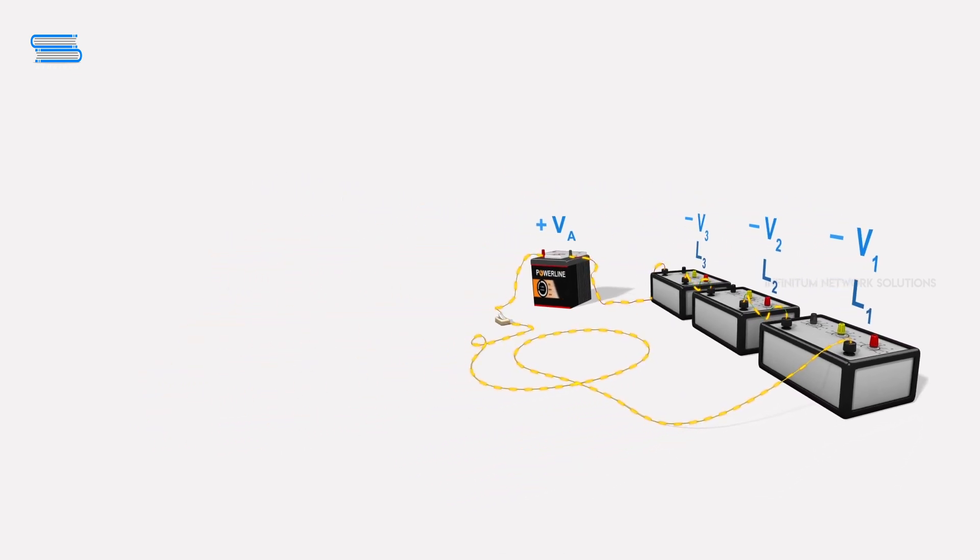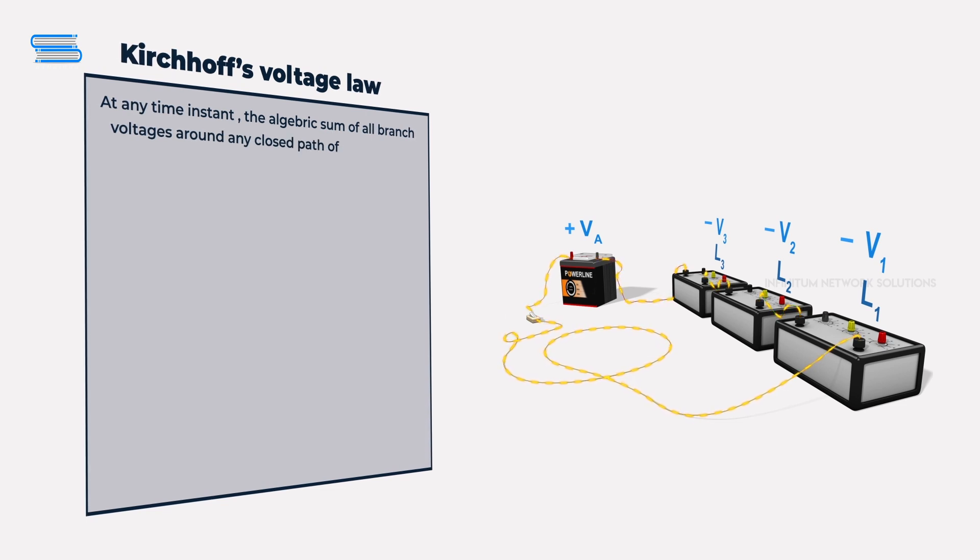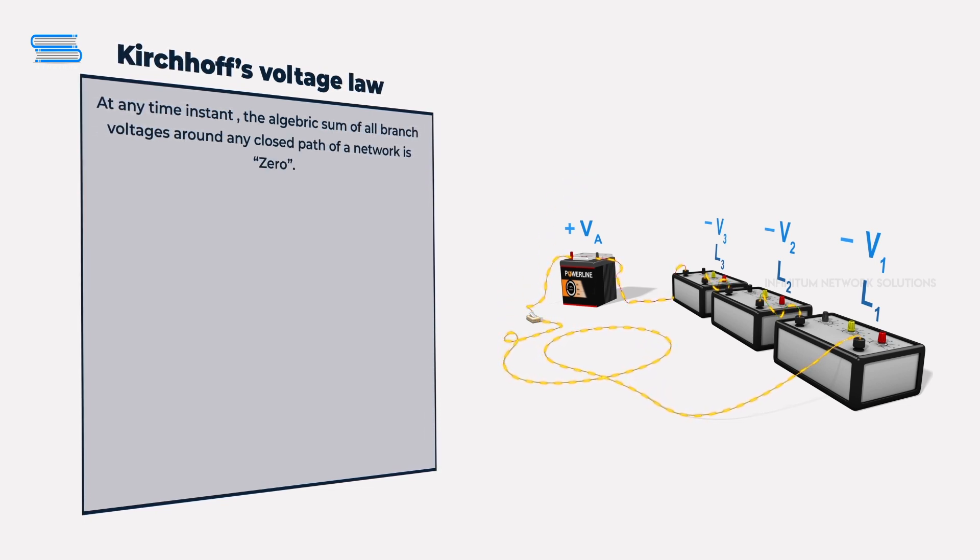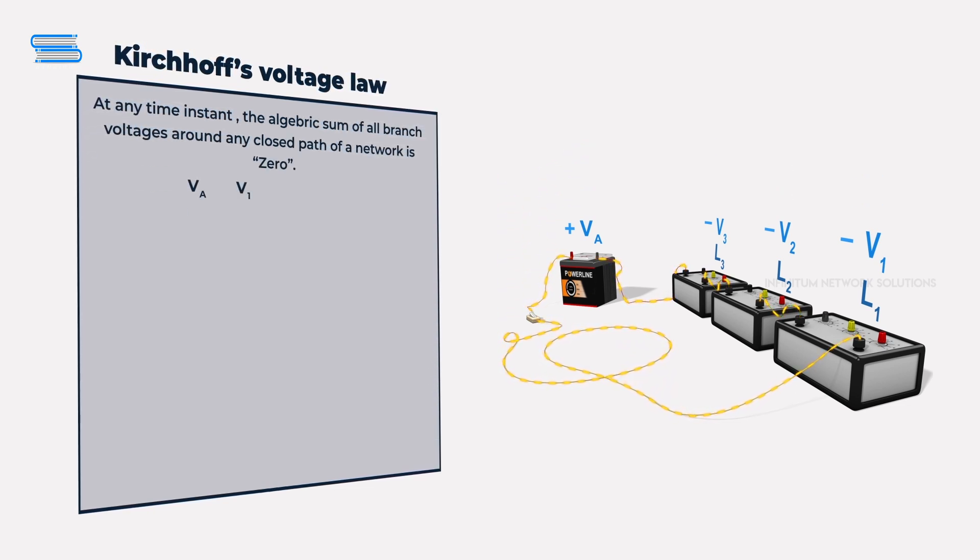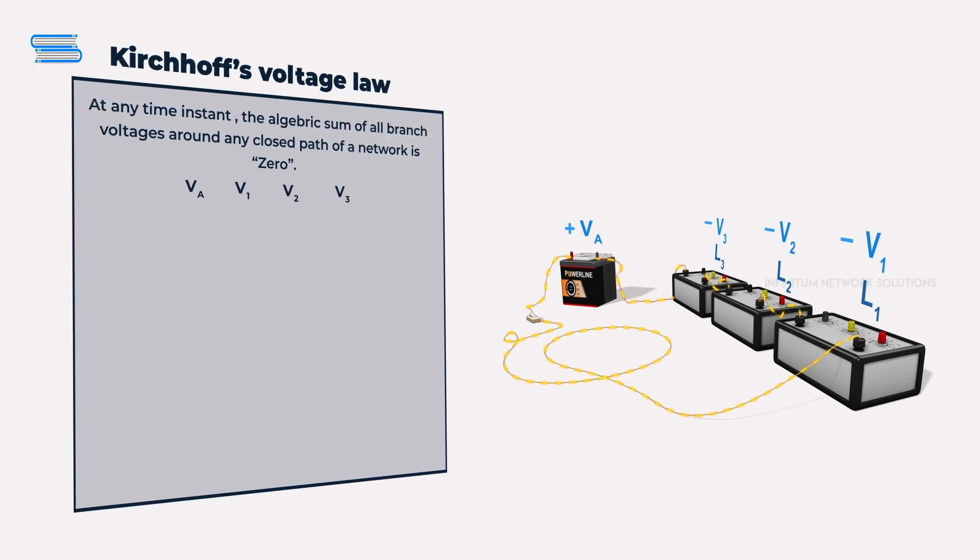Basically, what Kirchhoff's Voltage Law is saying is that the algebraic sum of each of these branch voltages VA, V1, V2, and V3 will add up to zero.